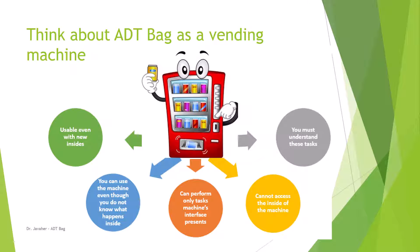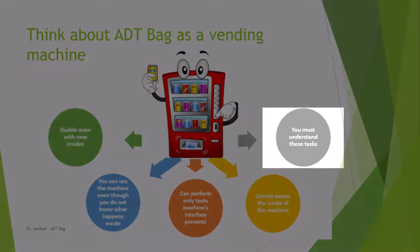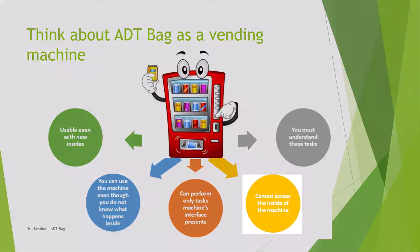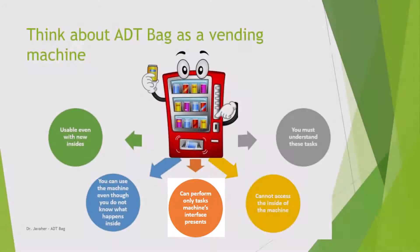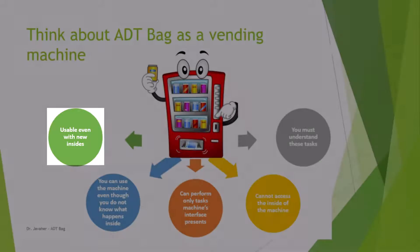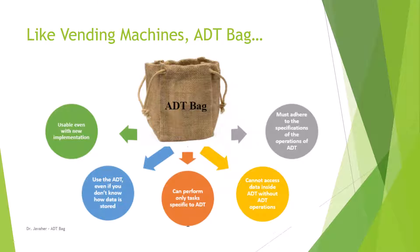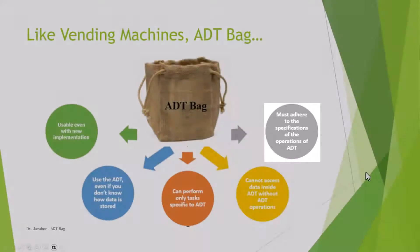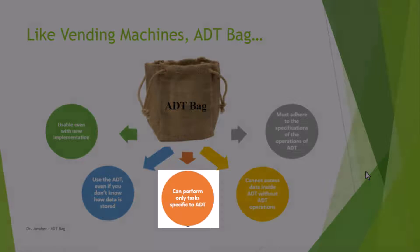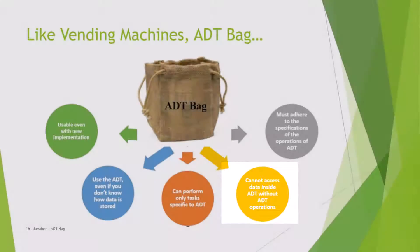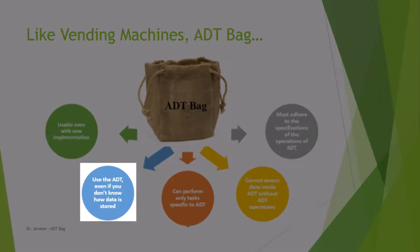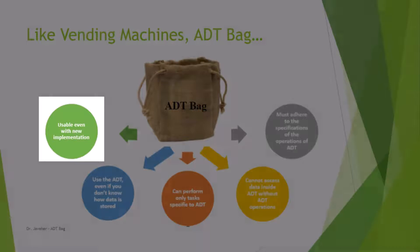Let's look at Bag as a vending machine. When dealing with a vending machine, you must understand the tasks you're dealing with. You cannot access the inside of the machine. You can use the machine even though you don't know what happens inside. You can perform only the tasks the machine's interface presents, and it's usable even with new items inside. Just like a vending machine, ADT-Bag has similar functions: you must adhere to the specifications of ADT operations, you cannot access data inside ADT without ADT operations, and you can use it even without knowing how data is stored.